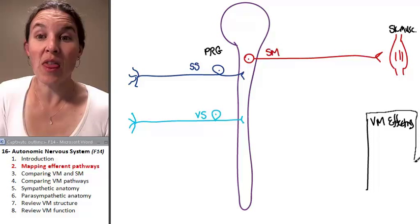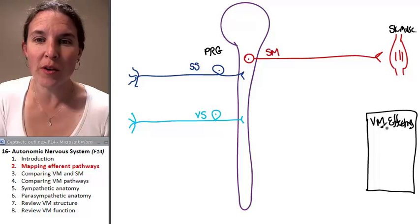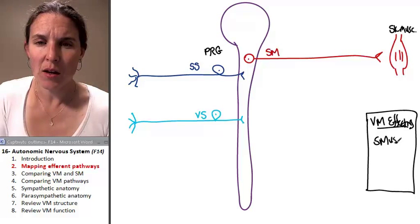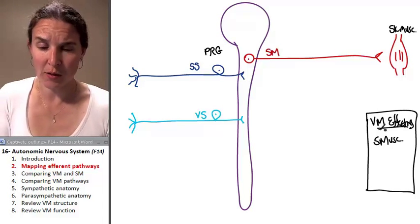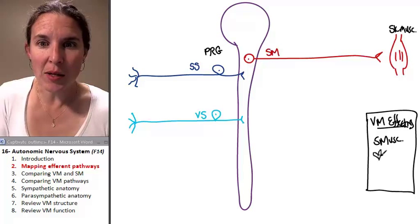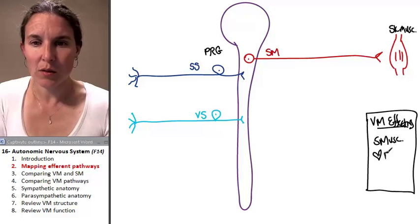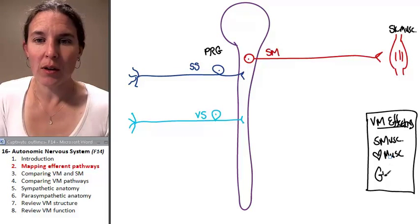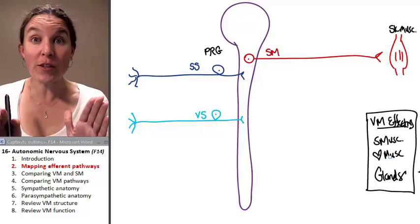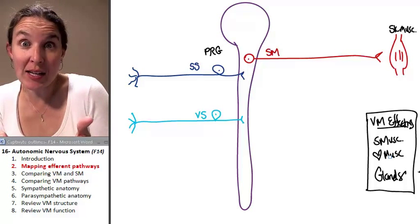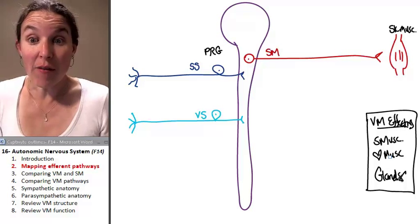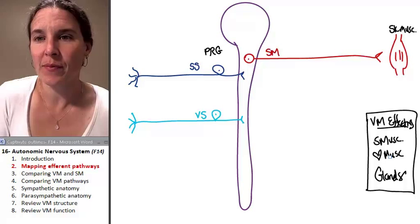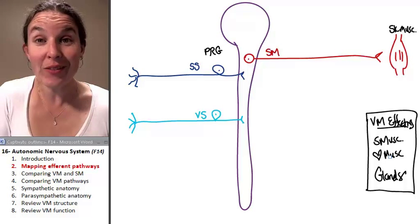We know that all visceral motor effectors are smooth muscle, that's smooth muscle, cardiac muscle. Is it visceral or what? Glands. All visceral motor innervates these guys. If a fiber is innervating these guys, it is a visceral motor fiber.